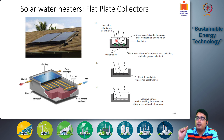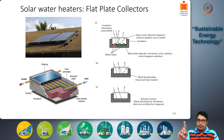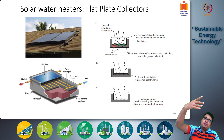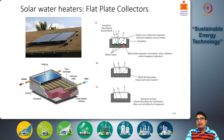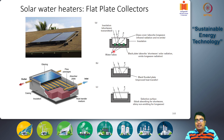Glass is transparent to visible light but opaque to infrared radiation — this is the same principle used in greenhouses. Sunlight passes through the glass cover and heats the absorber plate, but the infrared radiation emitted by the hot absorber plate is trapped and reflected back by the glass, creating a hot-house effect inside. This keeps the tubes and absorber plate much hotter than they would be without the glass cover.